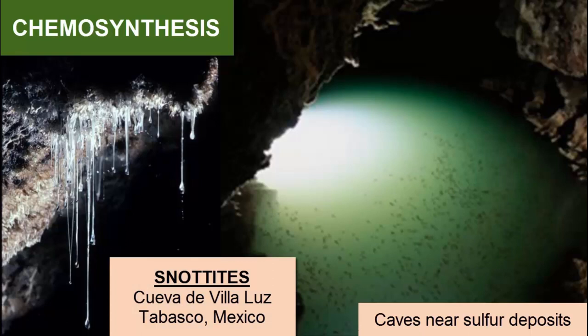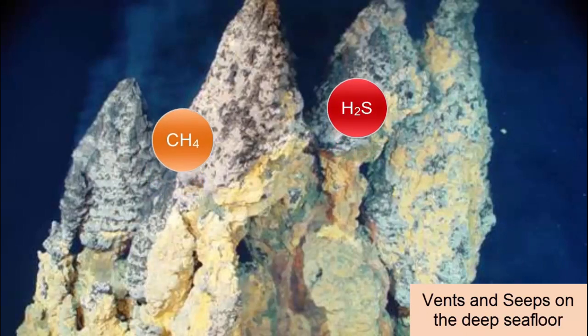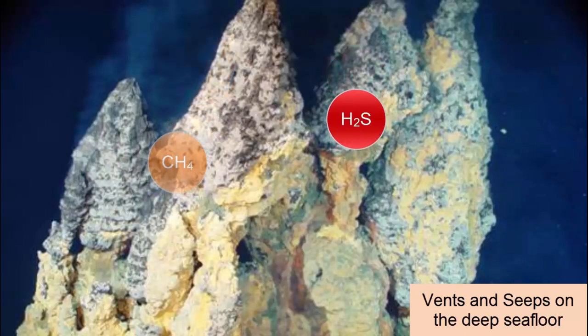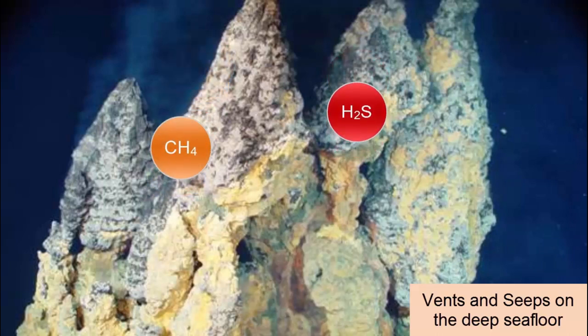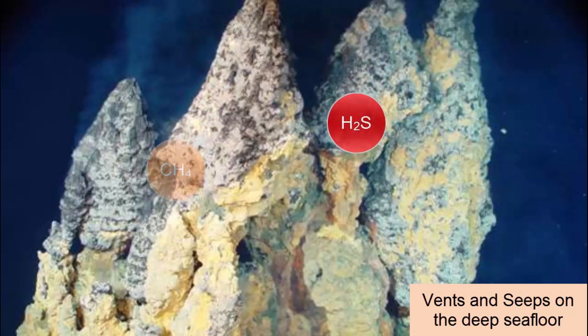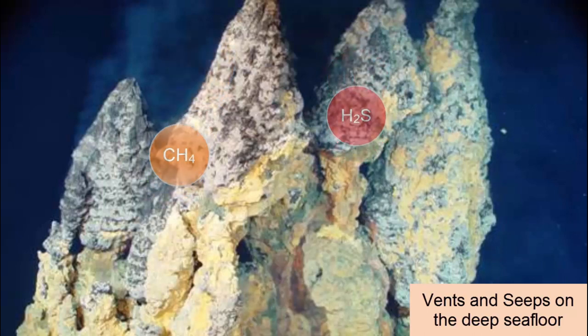This example is from Cueva de Villaluz in Tabasco, Mexico. These snotites have acid drops at their tips with a pH of zero. In hydrothermal vents and hydrocarbon seeps on the bottom of the seafloor, bacteria capture energy from hydrogen sulfide or methane gases and use that energy to synthesize sugar. These bacteria provide the base of an exotic and diverse food web.